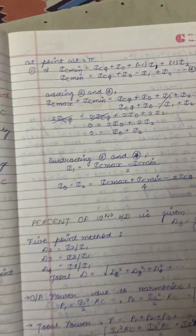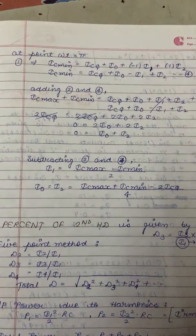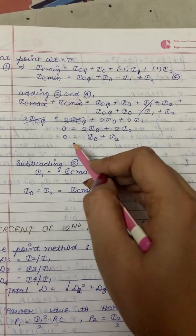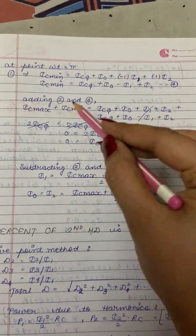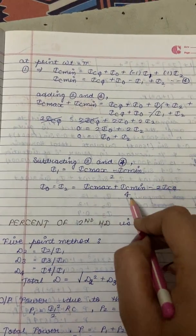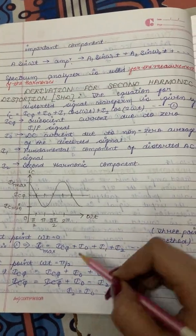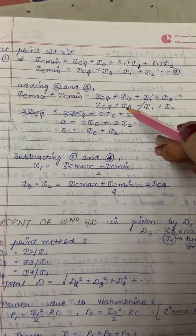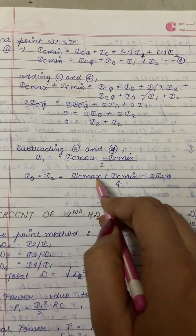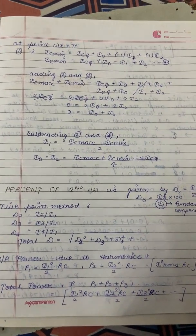These are equations one through four. By adding equations two and four — that is, adding the equations for IC_max and IC_min — we get I₀ + I₂ = 0. By subtracting, we get I₀ = I₂ = (IC_max + IC_min − 2·ICQ) / 4. So by solving the equation at different values of ωt, we obtain two results: by adding, I₀ + I₂ = 0; and by subtracting, I₀ = I₂ = (IC_max + IC_min − 2·ICQ) / 4. This completes the derivation for second harmonic distortion.